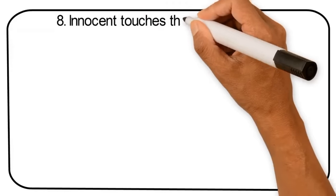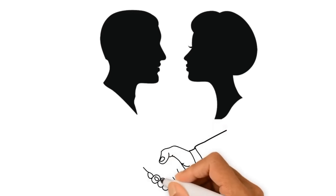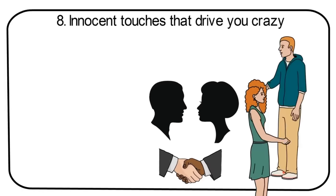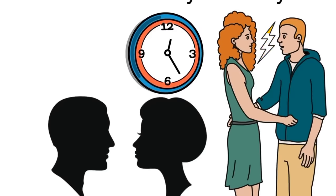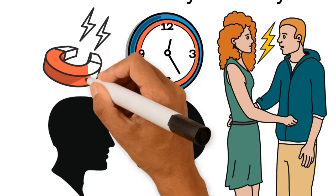Number 8, innocent touches that drive you crazy. You just want them close to you so that it's almost impossible to stay away. So you make the best of what you have, your handshakes and hugs last a bit longer than they are supposed to, and you feel your body responding to them with vibes so electric that you know they feel them too.